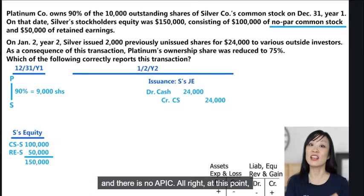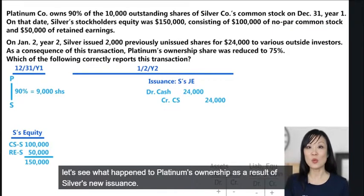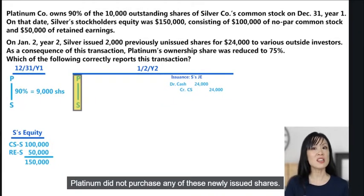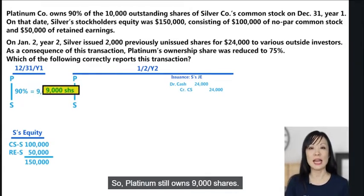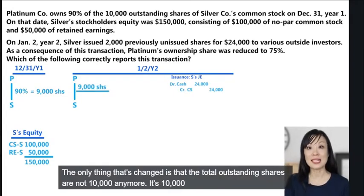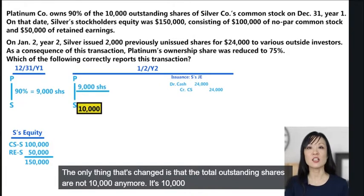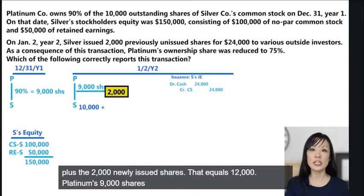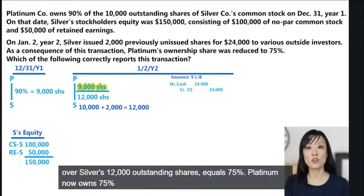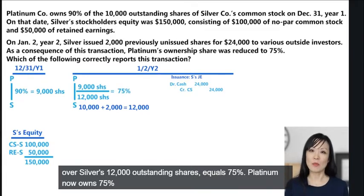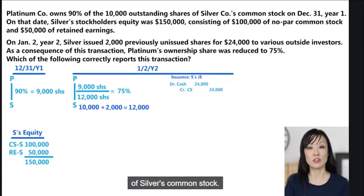Platinum did not purchase any of the newly issued shares, so Platinum still owns 9,000 shares. The only thing that changed is the total outstanding shares — from 10,000 to 12,000 (10,000 plus the 2,000 newly issued shares). Platinum's 9,000 shares divided by Silver's 12,000 outstanding shares equals 75%. Platinum now owns 75% of Silver's common stock.